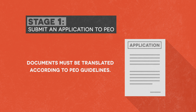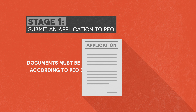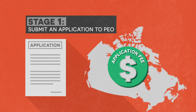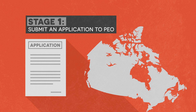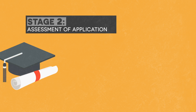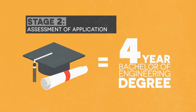When you submit your application you will also be required to pay an application fee. If you submit your application within six months of your landing date in Canada, the application fee may be waived by PEO — contact PEO for further details. The next stage is PEO's assessment of your application; they'll determine if your degree or degrees are equivalent to a four-year Bachelor of Engineering degree.